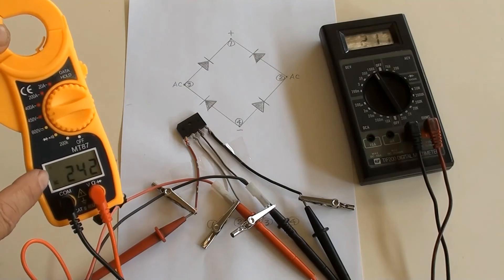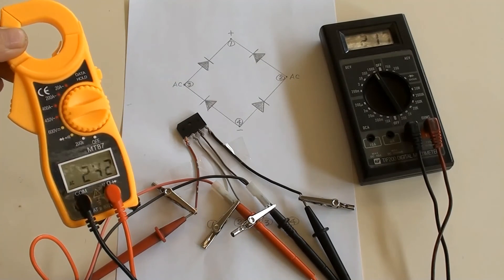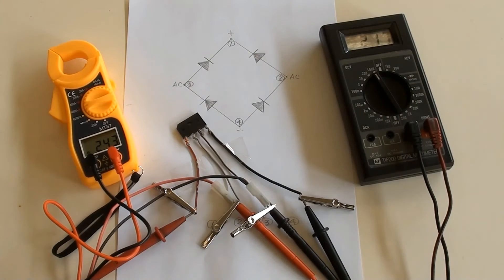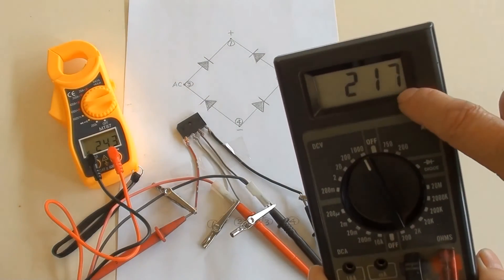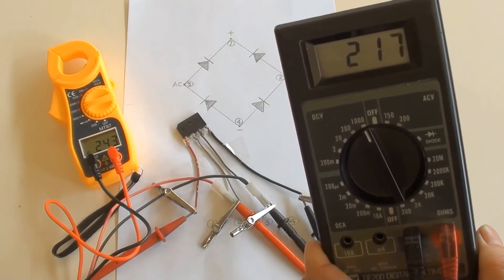AC 242 volt has been indicated for clamp meter on the left. DC 217 volt has been indicated for multimeter on the right.